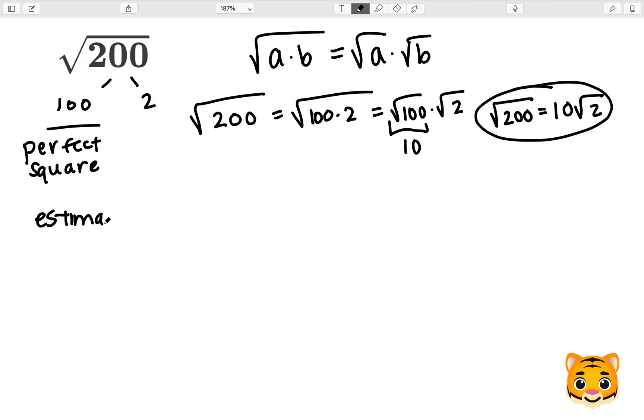We can also estimate the square root of 200 to the nearest whole number by looking at perfect squares near 200. Examples of perfect squares we can use include 14 squared which is 196 and 15 squared which is 225.